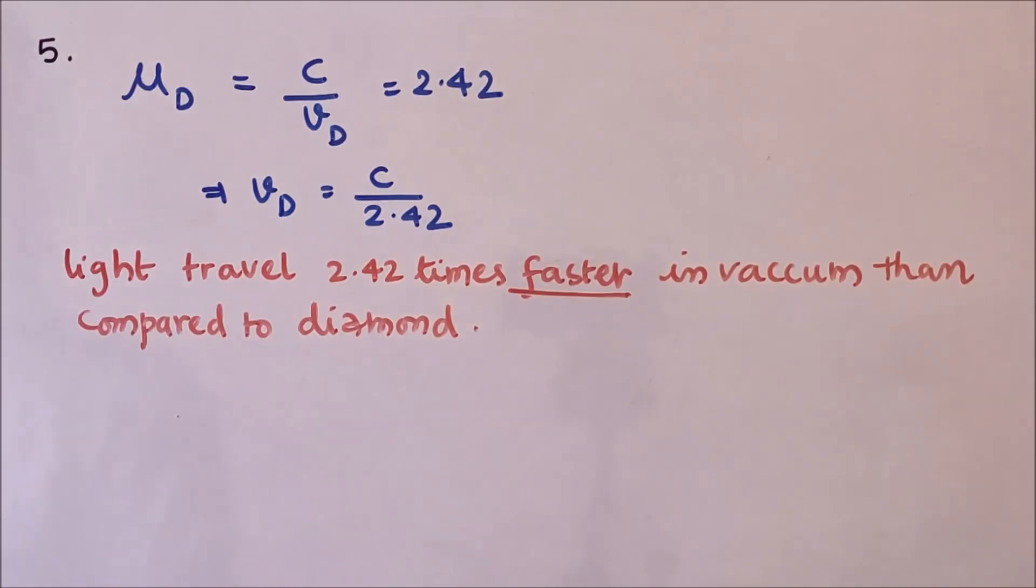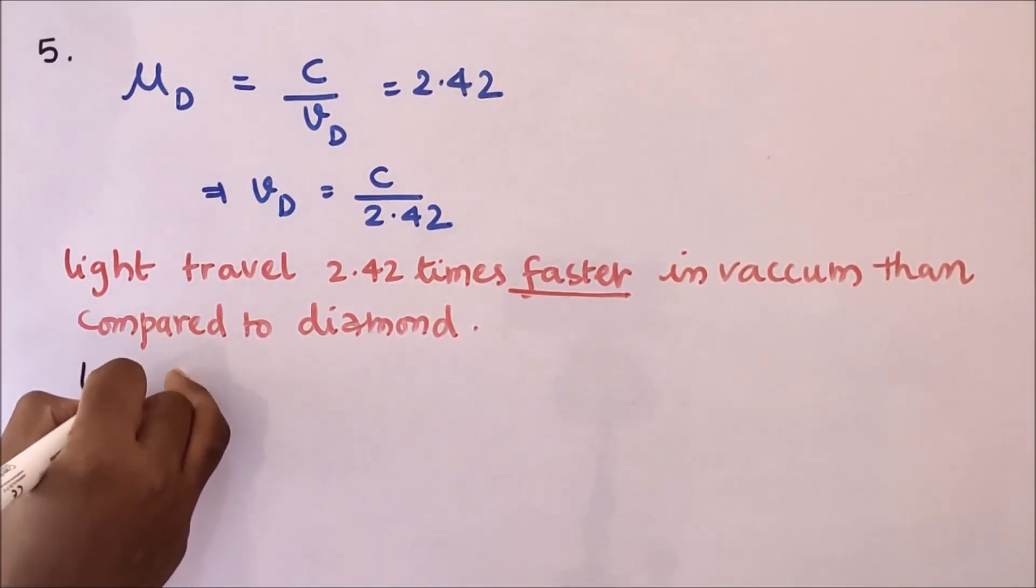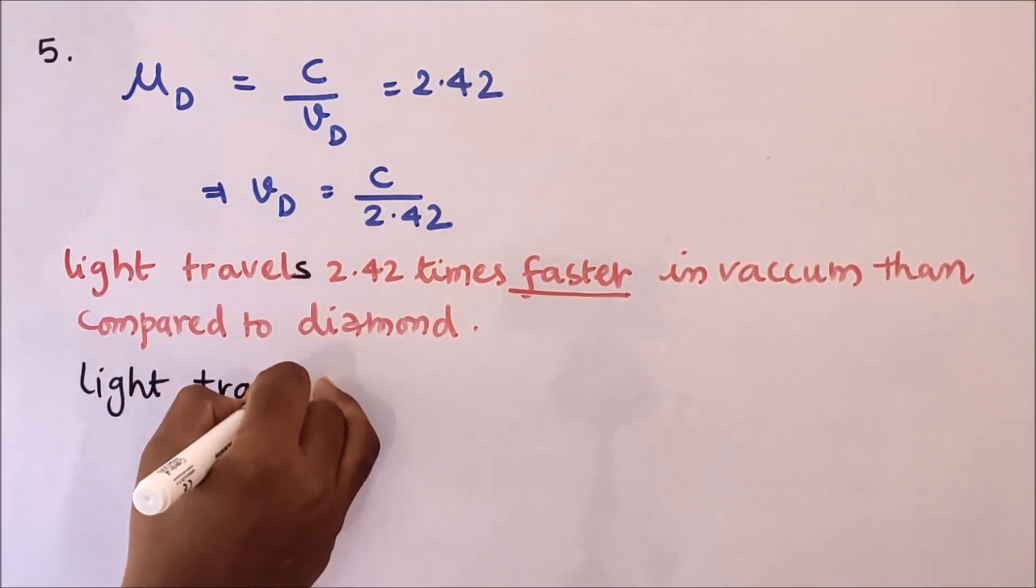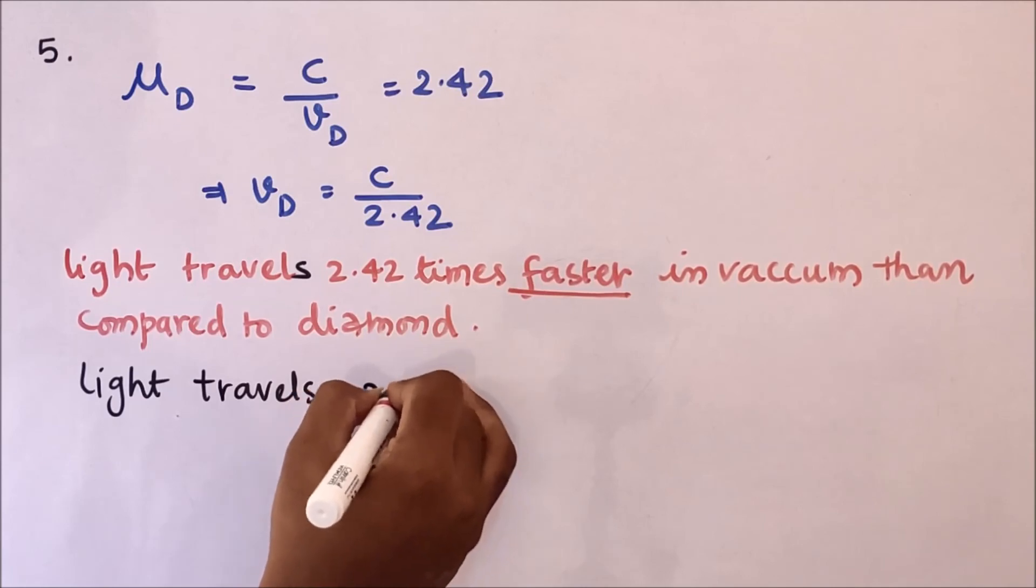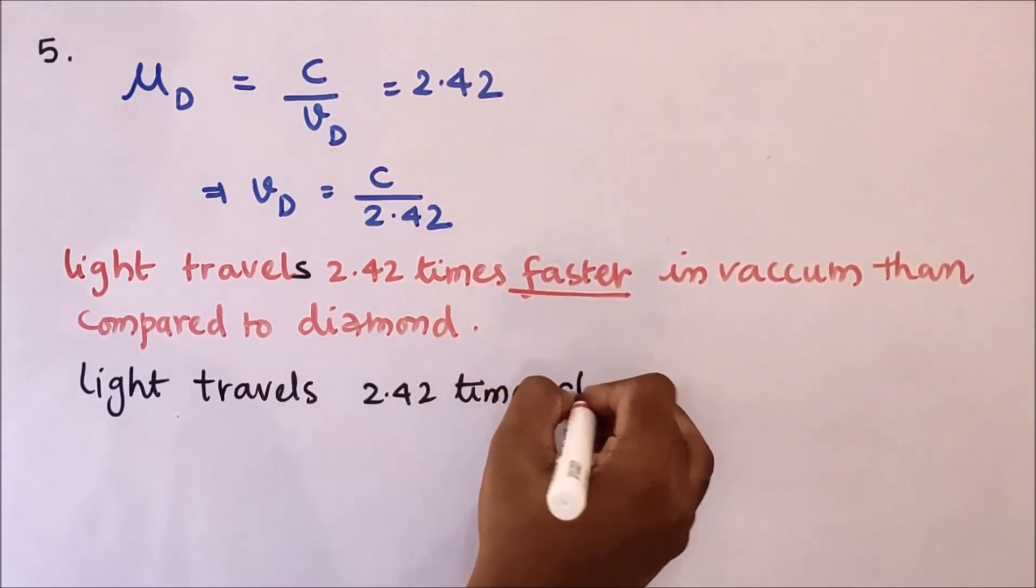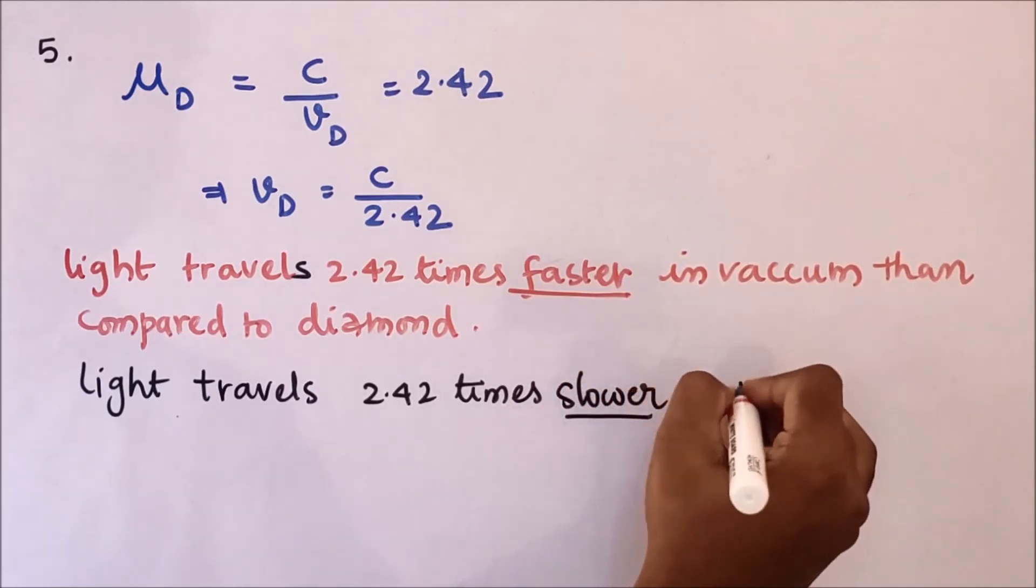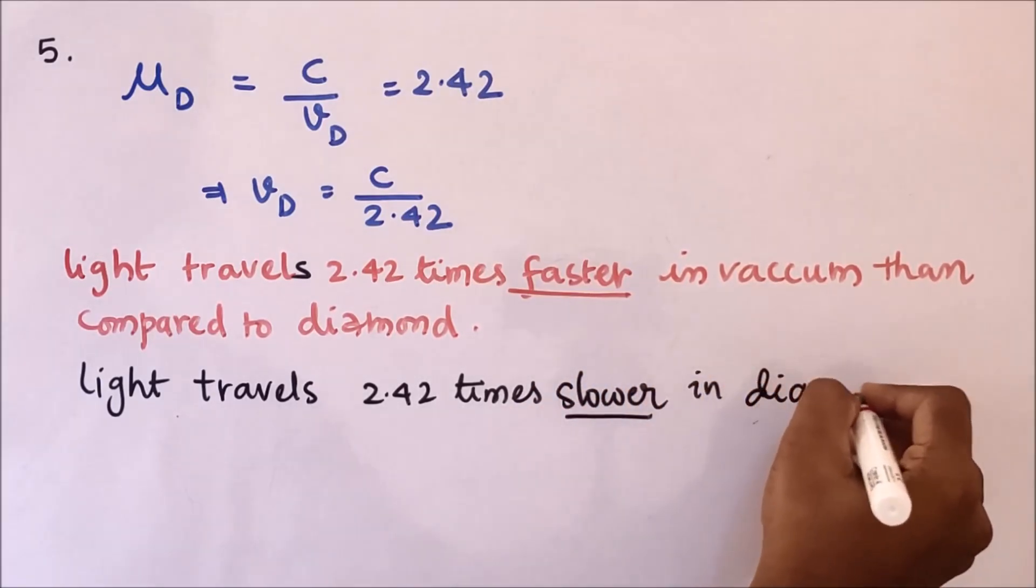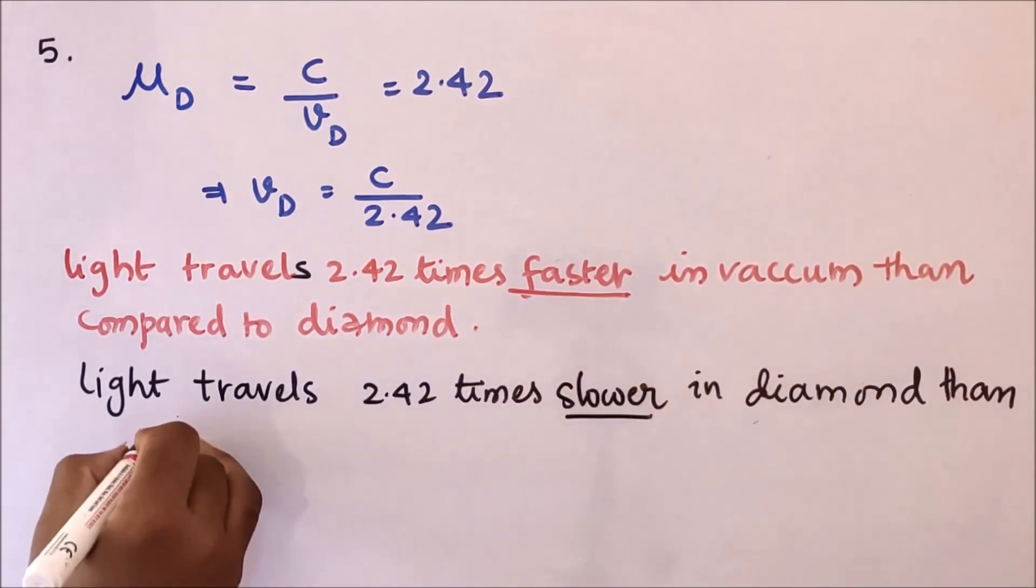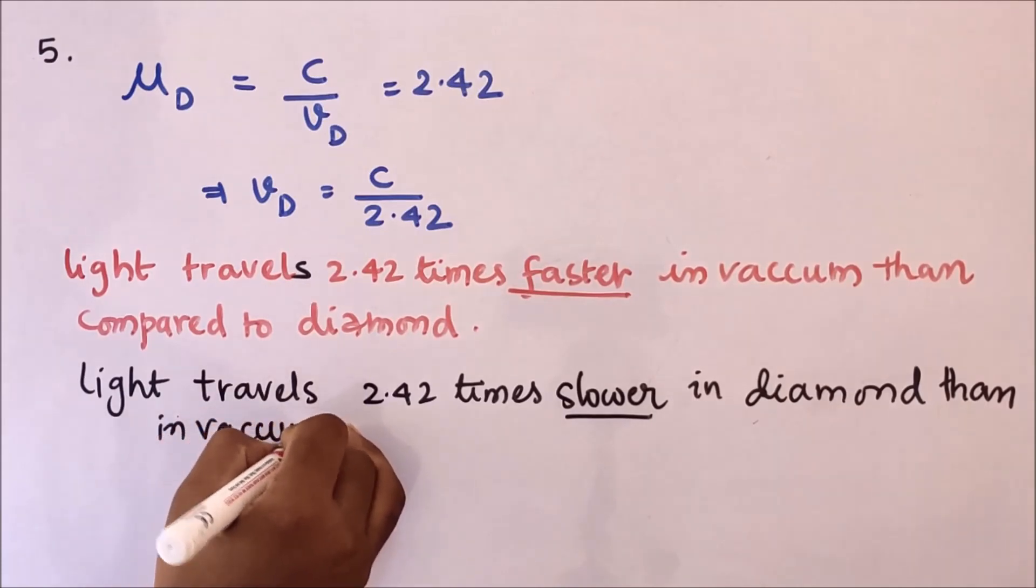Or you can write in a reverse way. Let me write in a reverse way: light travels 2.42 times slower in diamond than in vacuum. So since it is for just one mark, that is enough.